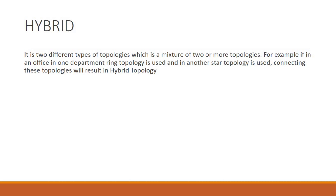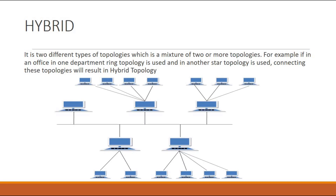Next is hybrid topology. Hybrid is a mixture of two or more topologies — for example, a combination of star topology and ring topology.